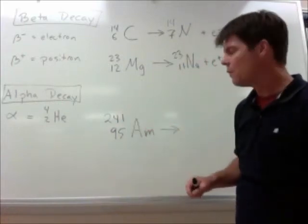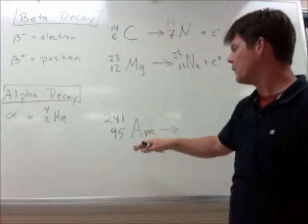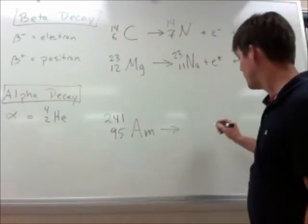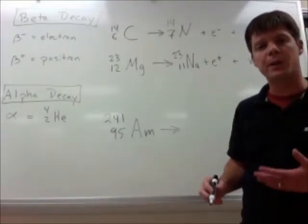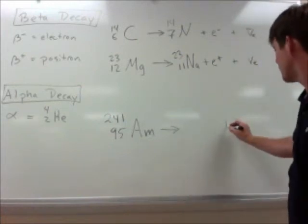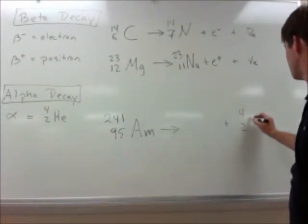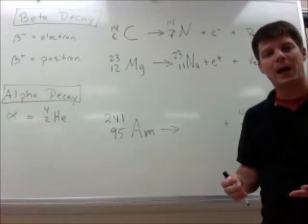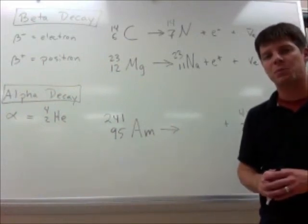So let's look at that process for the alpha decay of this element right here. Now, we know that an alpha particle is going to be produced, so I'm going to go ahead and write that in first. Now, how do I figure out the other element which is going to be produced by this process? It's really just a matter of simple subtraction.